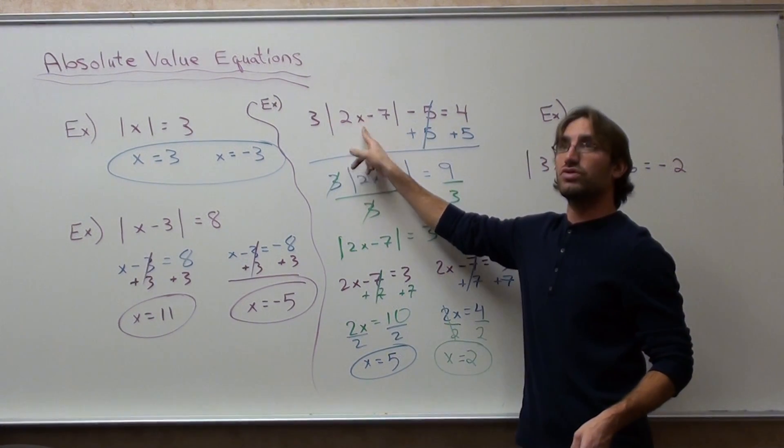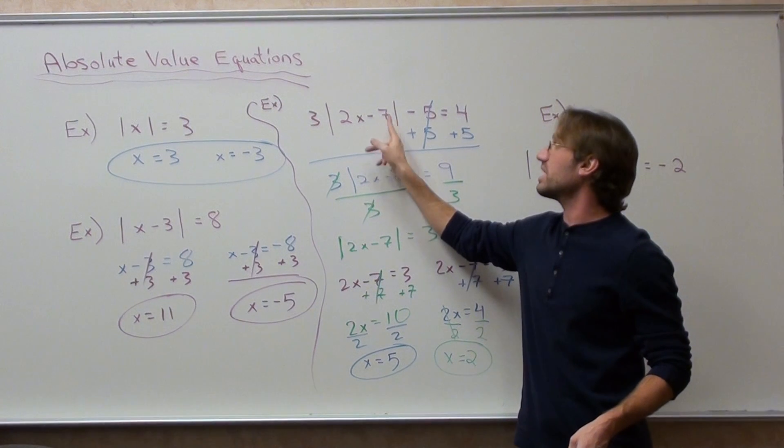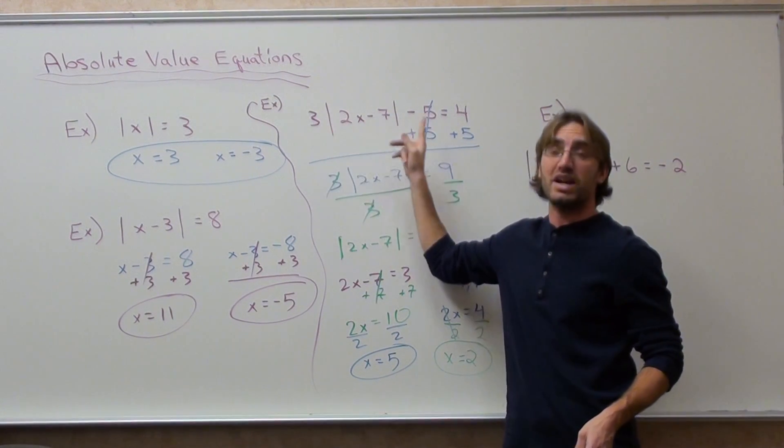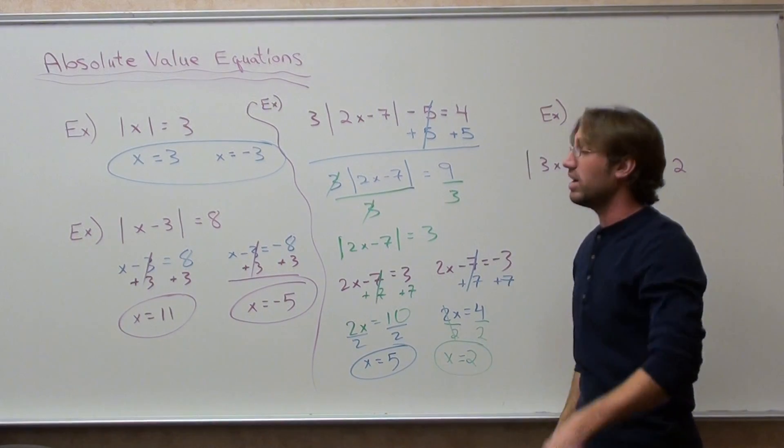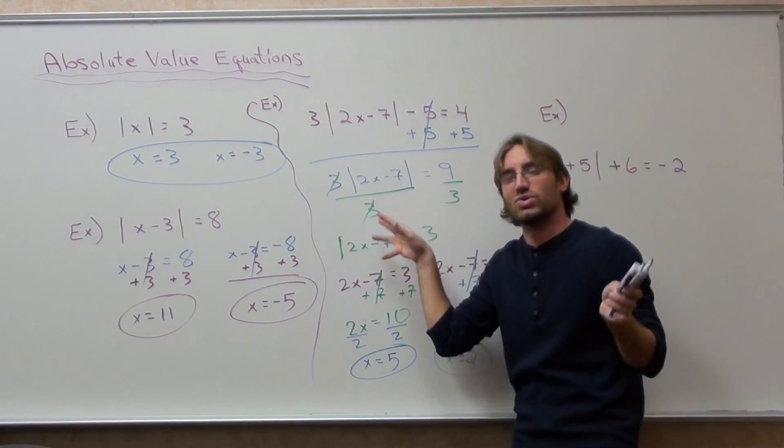Two times two is four. Four minus seven is negative three. Absolute value of negative three is three. Three times three is nine. Nine minus five is four. There you go.